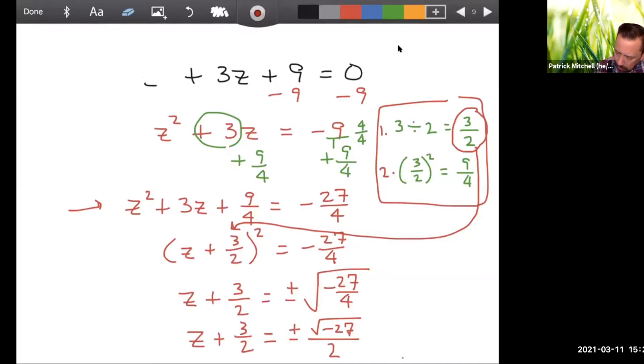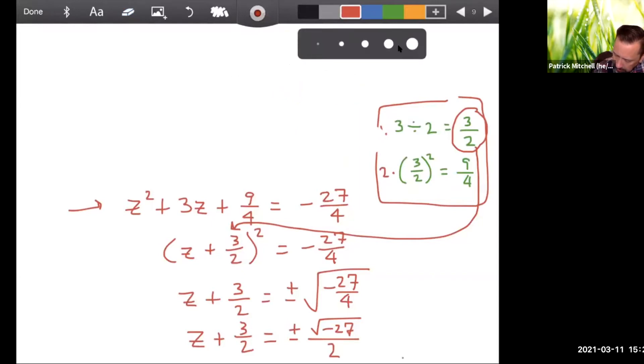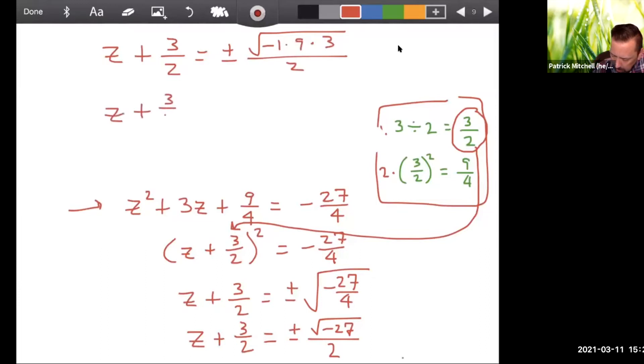But we are going to have to simplify that square root of negative 27. Alright. So that's going to give us z plus 3 halves. And now here's what I'm going to do with the negative 27. I'm going to write it as negative 1 times 9 times 3. Reminds me of what we did in the last section. The square root of negative 1 is i. The square root of 9 is 3. The square root of 3 is just square root of 3.